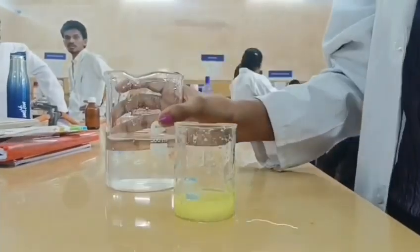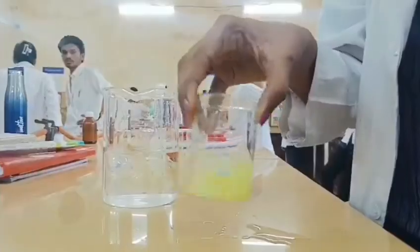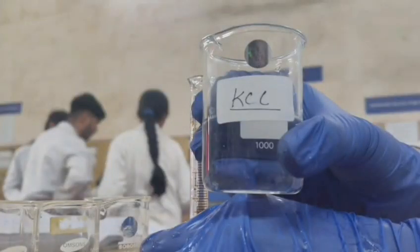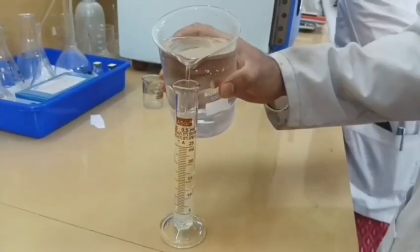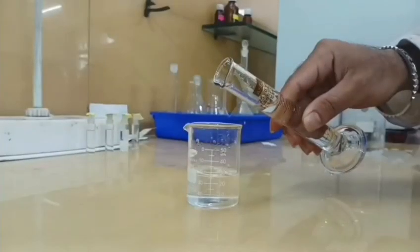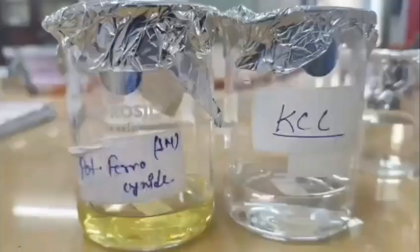For preparation we need to take 50 ml double distilled water for potassium ferrocyanide. Now after making up with this, our solutions are prepared.